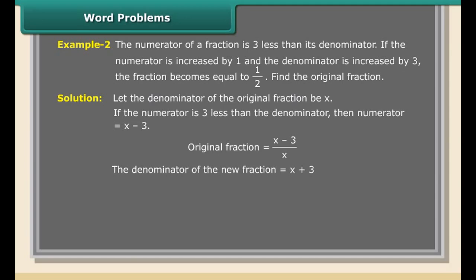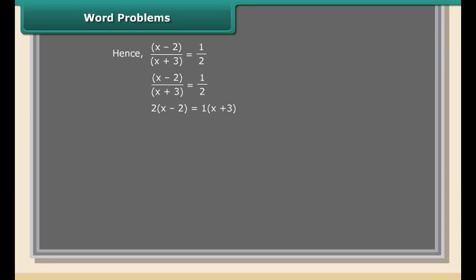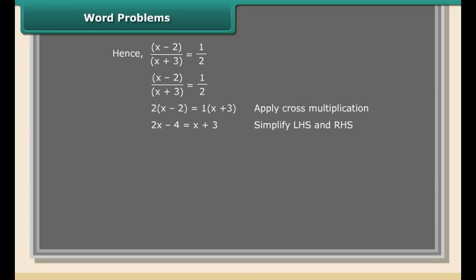Word problems, Example 1: one number is half the other; the sum of the two numbers is 6 — find the numbers. Solution: let one number be x, then the other is x/2. So x + x/2 = 6, giving 3x/2 = 6, so x = 4. The numbers are 4 and 2. Check: 4 + 2 = 6. The answer is correct.